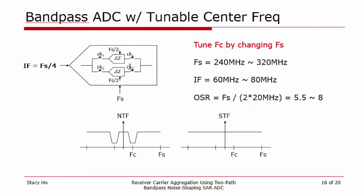The signal band can be easily tuned by changing FS. For example, to achieve an IF tuning range of 60 to 80 MHz, the sampling frequency must be adjusted between 240 and 320 MHz. Note that for a given signal bandwidth, sampling frequency tuning does result in a variation of the oversampling ratio. Thus, the ADC SQNR must be designed to account for this variation in OSR.